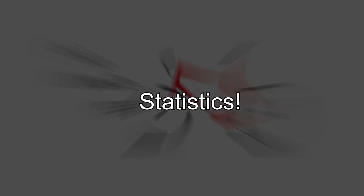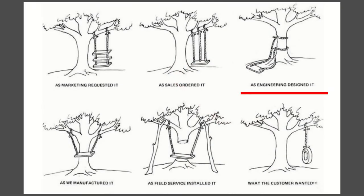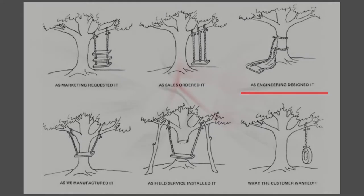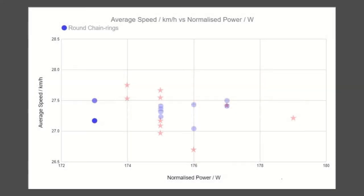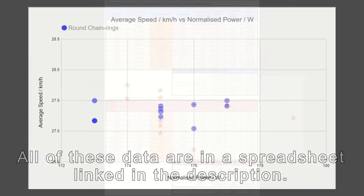I'm just a simple engineer, not a statistician, so I'll be looking at this in a fairly rudimentary way. First of all, I'm going to make the data more uniform by removing the 40km training route data, so I'm just left with the 9.5km route data that you can see here.